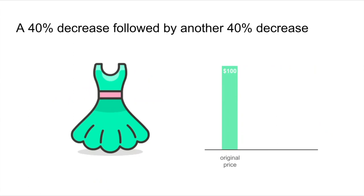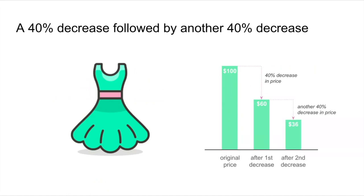Another similar example: a dress that costs $100. The store reduces the price by 40%, taking it down to $60. What if you dropped it by another 40%? You might think it would be 80% lower than the original price, but no — you only take the 40% off the new price of $60, which drops it to $36. That's a 64% decrease in price overall. Again, another example that really tricks us and isn't super obvious.